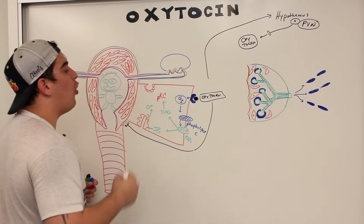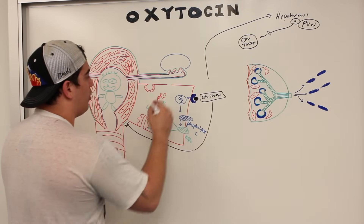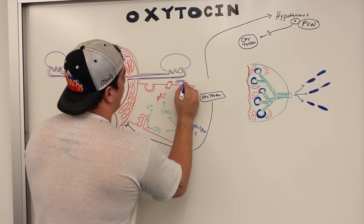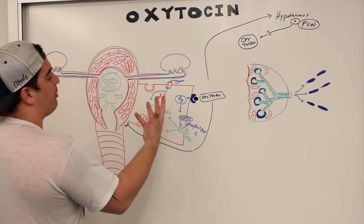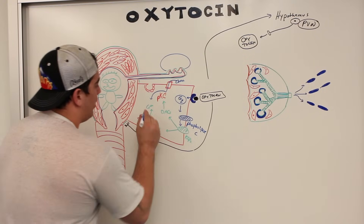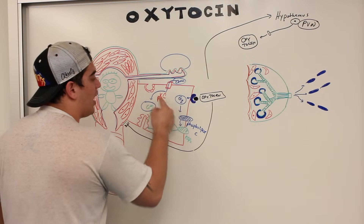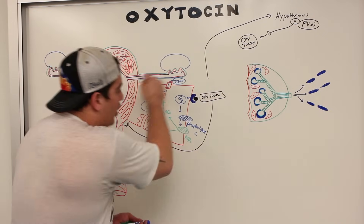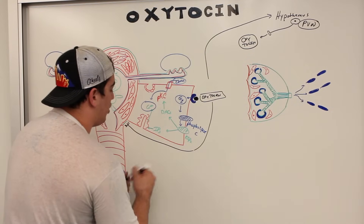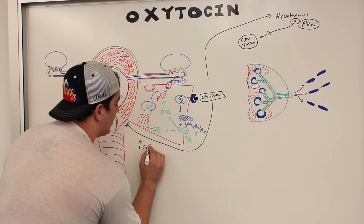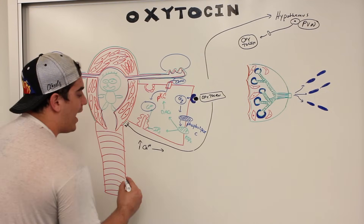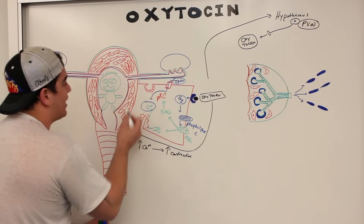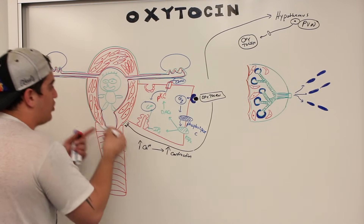What's the DAG going to do? DAG is going to activate another protein kinase called protein kinase C. Protein kinase C will phosphorylate proteins on the cell membrane to allow for calcium entry from the extracellular space. So the whole purpose of this is increasing the intracellular concentration of calcium. What's that going to do to this muscle cell? It's going to enhance the contraction process. The overall effect of oxytocin is increasing intracellular calcium levels, which increases contraction.